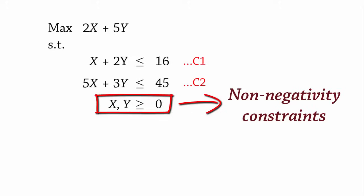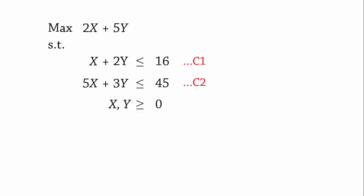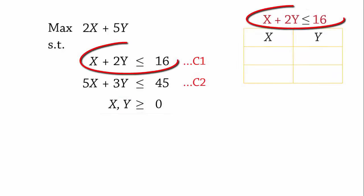To solve the model graphically, we begin by finding points that satisfy the constraint lines. For the first constraint, when X equals 0, Y equals 8. And when Y equals 0, X equals 16.